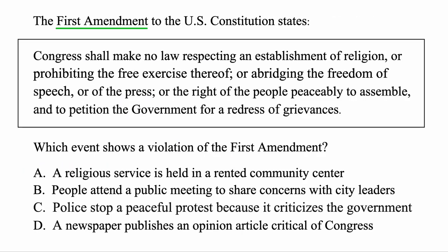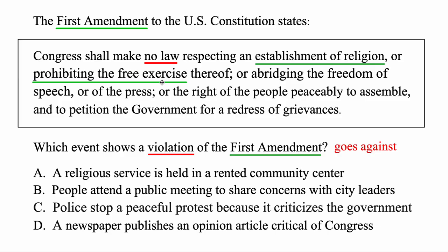Here's another question about the First Amendment. They give you a little excerpt and then ask a question: which event shows a violation of the First Amendment? A violation means something that goes against it. Let's read: 'Congress shall make no law respecting an establishment of religion or prohibiting the free exercise thereof.' That means there should not be a law establishing one religion like Christianity, or prohibiting the free exercise of other religions. Or abridging — meaning limiting — the freedom of speech or of the press. There should be no law that limits freedom of speech or the press.